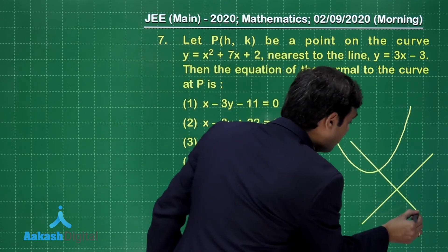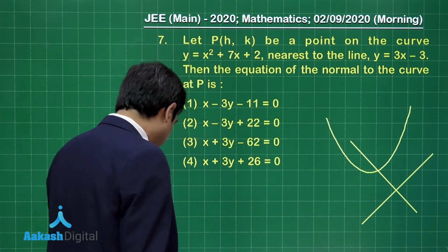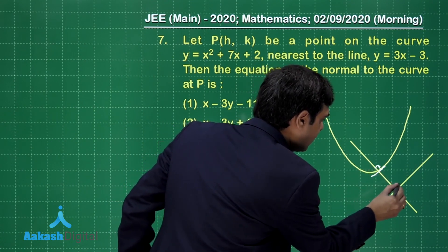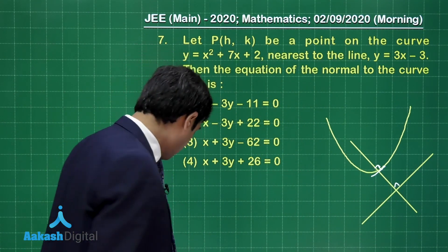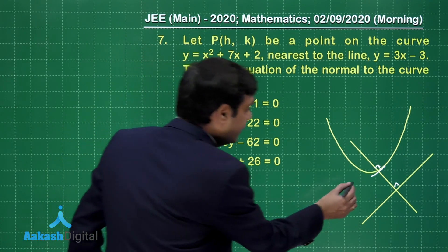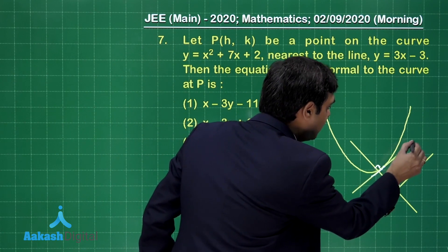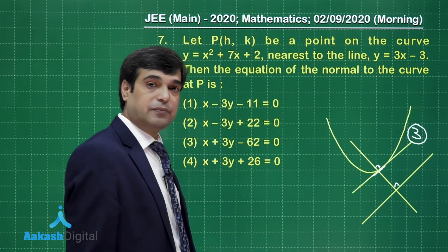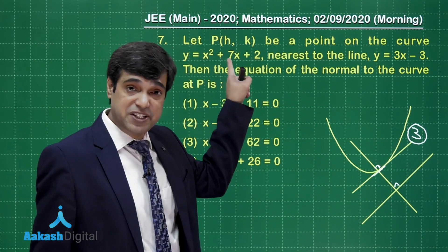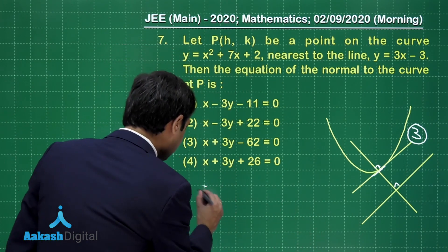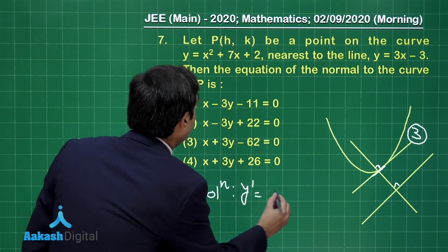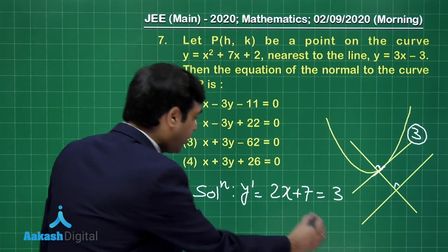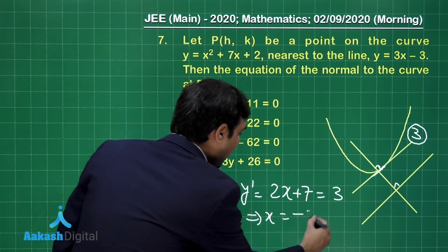The perpendicular from P to the line means the normal at P points toward the line. This means the tangent at P is parallel to the given line. Since the line y = 3x minus 3 has slope 3, the tangent slope must also be 3. Using differentiation, dy/dx = 2x + 7; setting this equal to 3 gives x = minus 2.